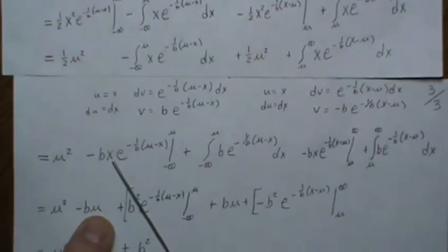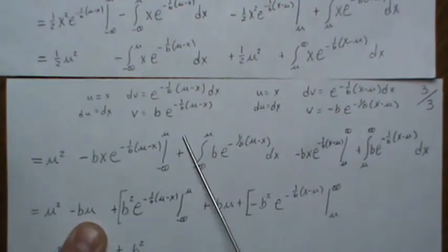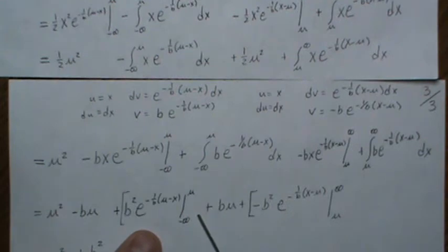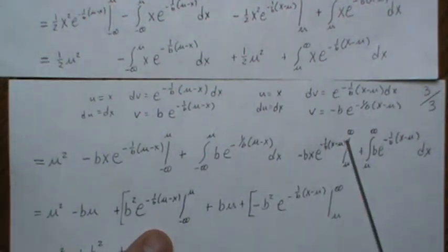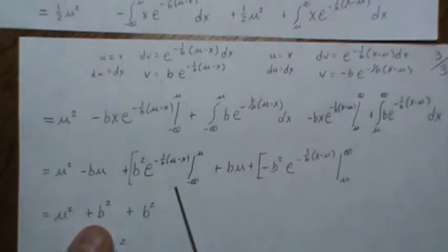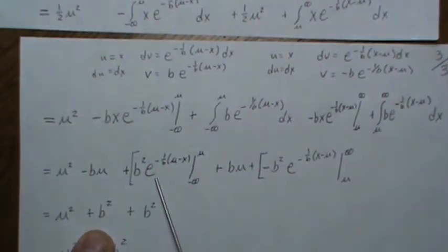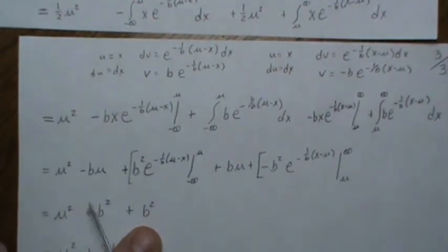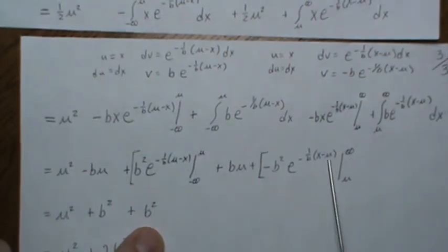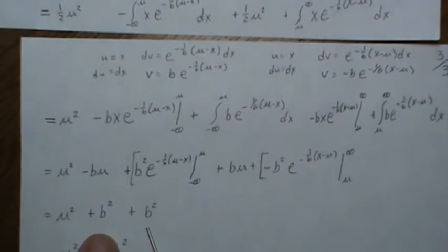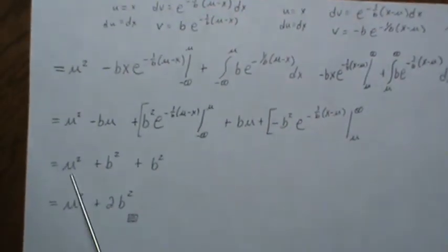The two one half mu squared terms combine to give mu squared. Plugging in limits: at infinity terms go to zero; plugging in mu brings down the mu term. Integrating the remaining exponential pieces and plugging in limits — infinity goes to zero, and plugging in mu gives b squared from the minus a minus sign. Those two b squared contributions add to give two b squared.